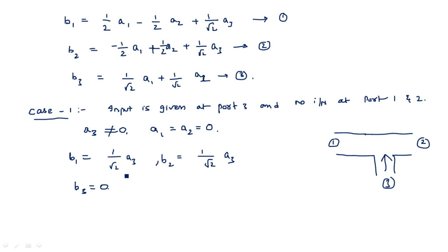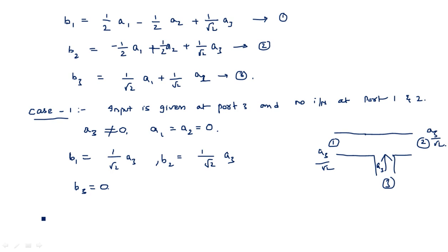The conclusion for this case: when power is applied at the third port, the power goes to port 1 as well as port 2. The incident power A3 at port 3 splits equally to both ports as A3/√2. Since 1/√2 corresponds to a 3 dB reduction in power, we can say this acts as a 3 dB splitter. The H-plane T-junction is also known as a 3 dB splitter.